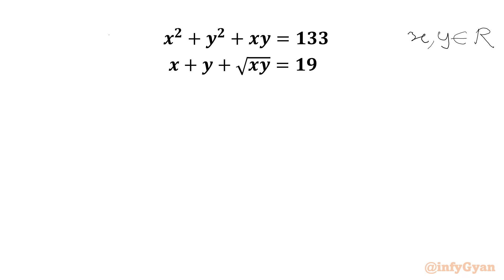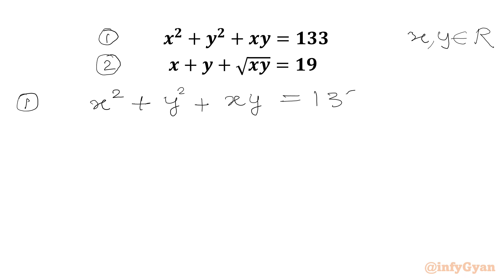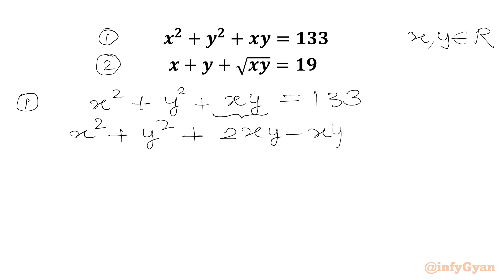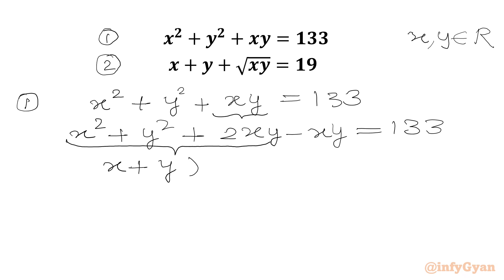Let's get started by considering the first expression as equation 1 and the second as equation 2. Beginning with equation 1: x squared plus y squared plus xy equals 133. We can split xy by writing x squared plus y squared plus 2xy minus xy, where 2 minus 1 equals 1, so this still equals 133. We then write xy as the square root of xy, whole squared.